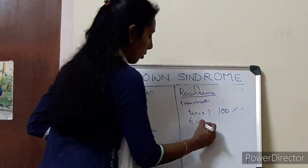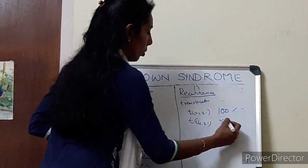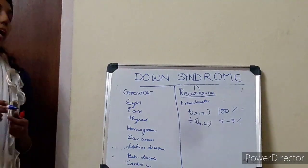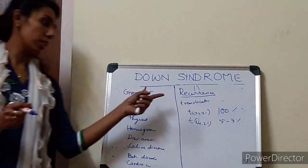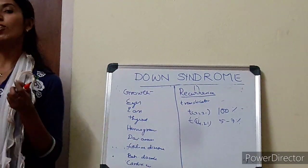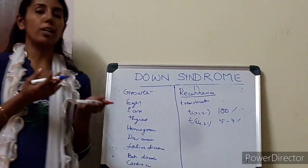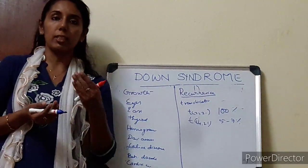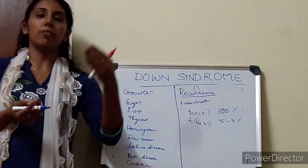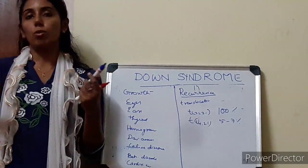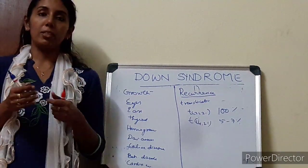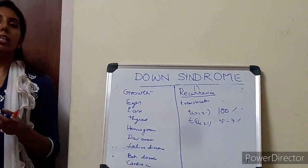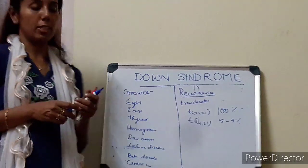If the translocation is 14-21, the risk is around 5 to 7%. Also, when you see a baby with translocation, we tend to evaluate the mother and the father with karyotype. If the translocation is inherited from the mother, the risk is around 10%, whereas if the translocation is inherited from the father, the risk decreases to around 5%.